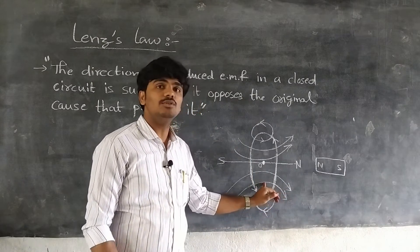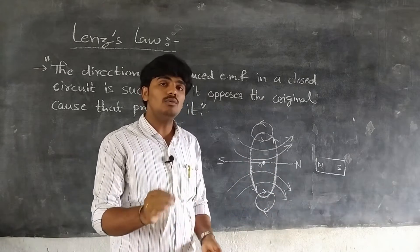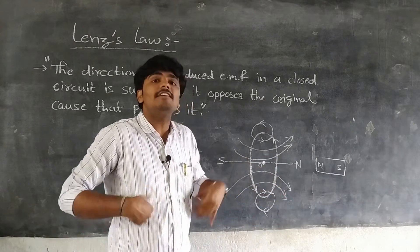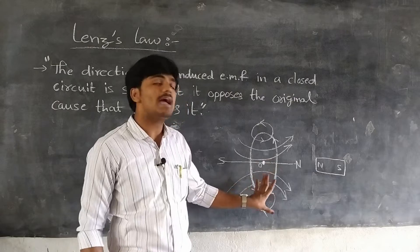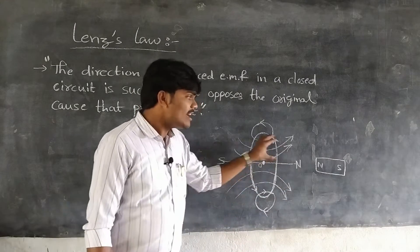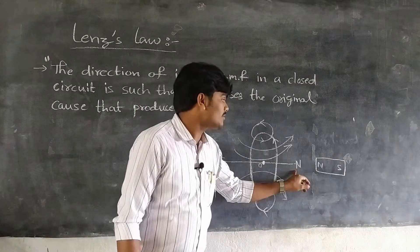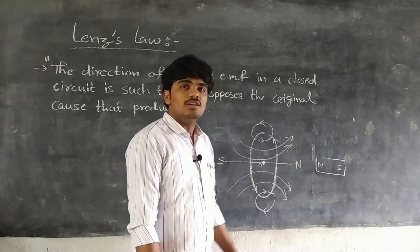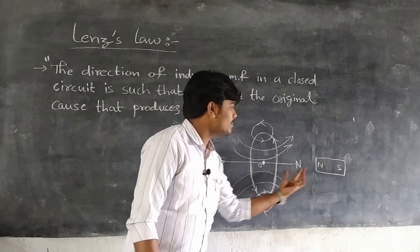This induced current produces its own magnetic field. Now the coil acts itself as a magnet. The face of the coil towards the north pole of the magnet becomes north pole. So there will be a force of repulsion between them.